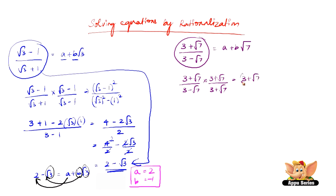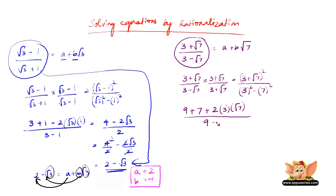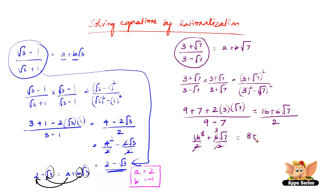So (3 + √7) × (3 + √7) = (3 + √7)², and (3 - √7) × (3 + √7) = 3² - (√7)². Expanding the numerator: 9 + 7 + 2 × 3 × √7 = 16 + 6√7, divided by 9 - 7 = 2. Further simplifying: 16/2 + 6√7/2, which gives us 8 + 3√7.